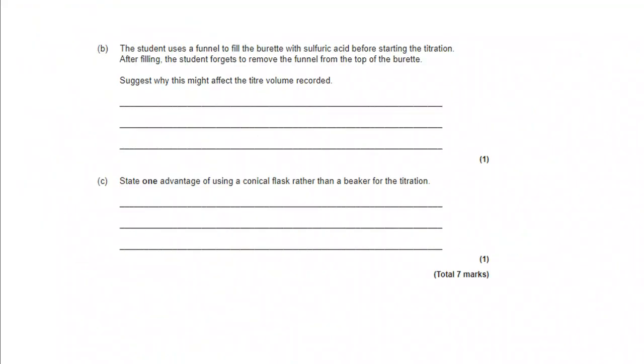Let's take a look at parts B and C. For B, the student uses a funnel to fill the burette before starting the titration, but after filling, forgets to remove the funnel from the top of the burette. Why might that affect the titer volume recorded?